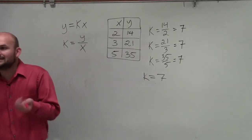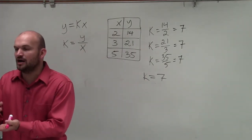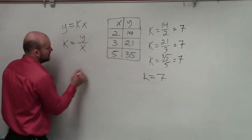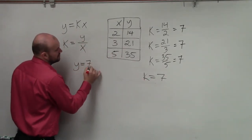Then the last thing it says is write the equation of the direct variation, or write the function. So if k is equal to 7, I can just write y equals 7x.